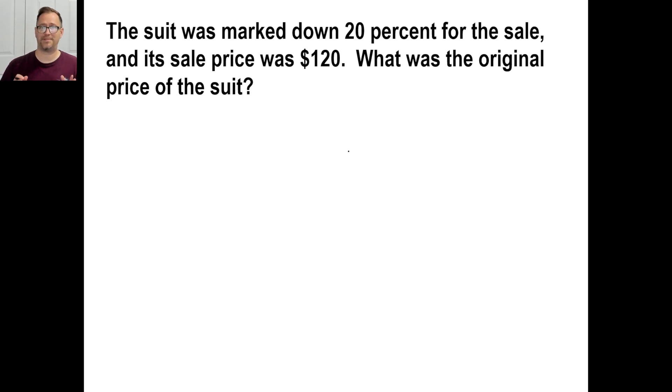Pause it and try B. The suit was marked down 20%. The sale price is 120. What's the original price? Obviously, the original price was more than 120. It's marked down 20%, so that means you are paying 80%. So $120 is 80% of some number. $120 is 80% of something. And switch it to go left to right, which all good-hearted people do.